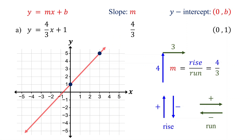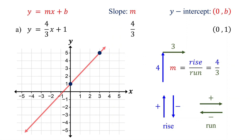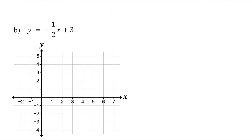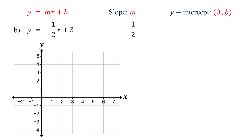That's your graph. Now let's see what happens when the slope is negative. First, identify the slope and the y-intercept. The slope is negative 1/2, and the y-intercept is (0, 3). Next, plot the y-intercept on the coordinate plane. For a refresher on plotting points, check the link in the description below.